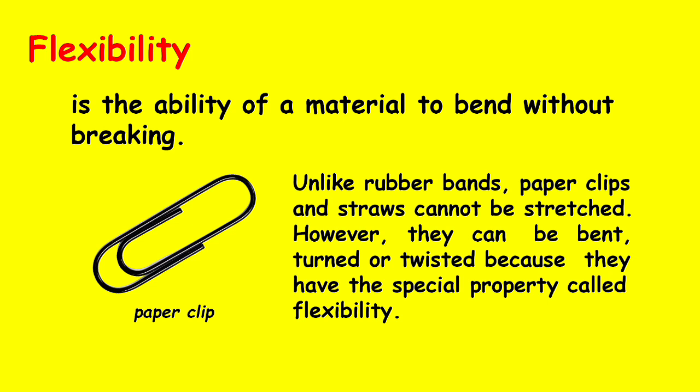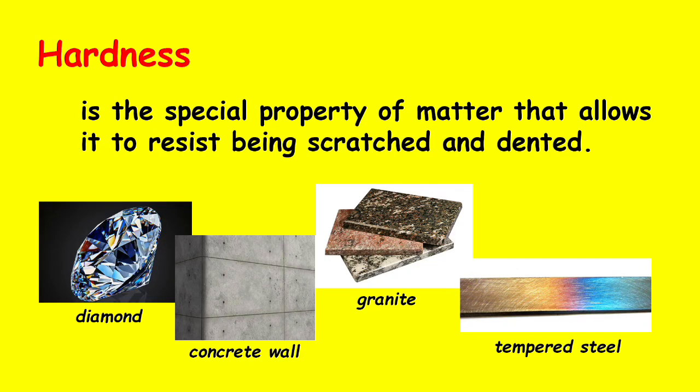Flexibility is the ability of a material to bend without breaking. An example is the paper clip. Unlike rubber bands, paper clips and straws cannot be stretched. However, they can be bent, turned, or twisted because they have the special property called flexibility. Hardness is the special property of matter that allows it to resist being scratched and dented. Examples are diamond, concrete wall, granite, and tempered steel.